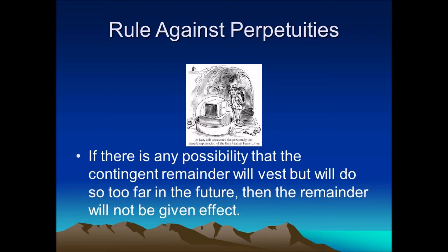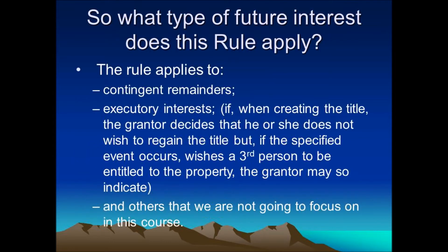This places emphasis on the possibility of remote vesting. If a situation can be imagined in which the interest might not vest within the perpetuities period, then that interest is going to be void — even though the circumstances bringing about remote vesting are unlikely to occur, or even unrealistic.